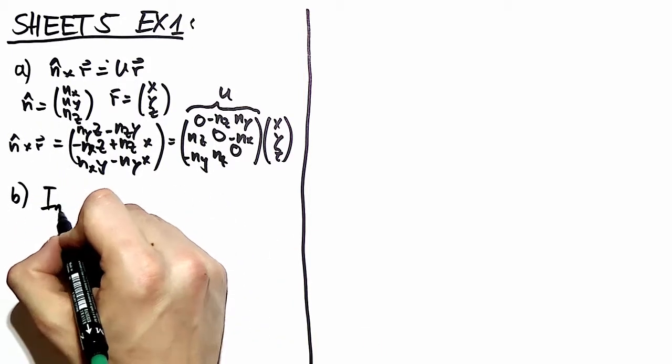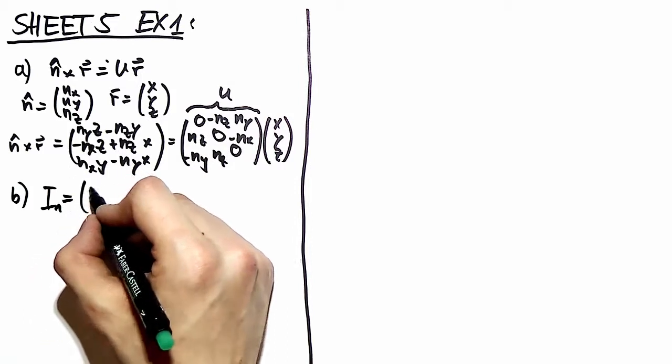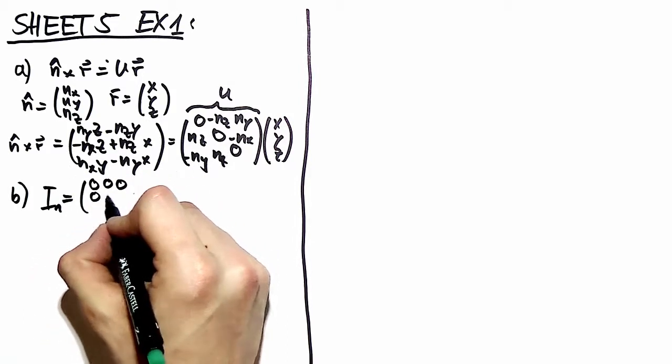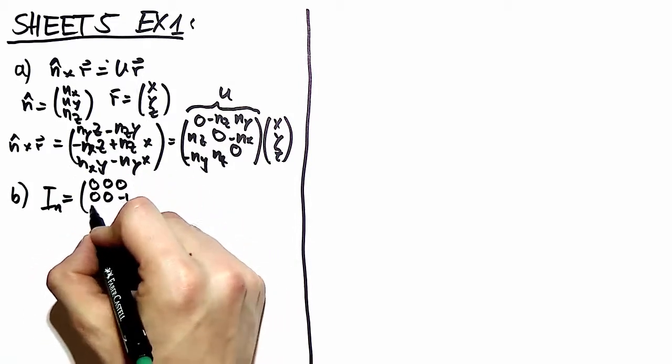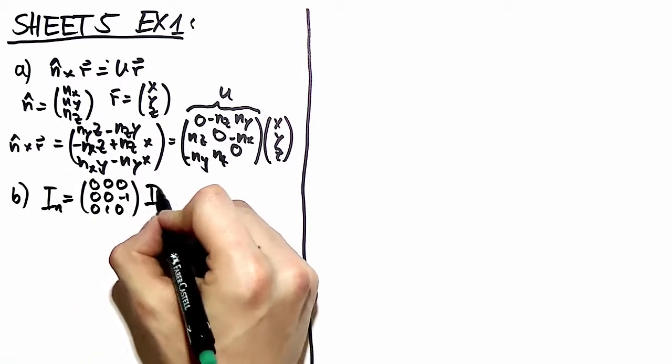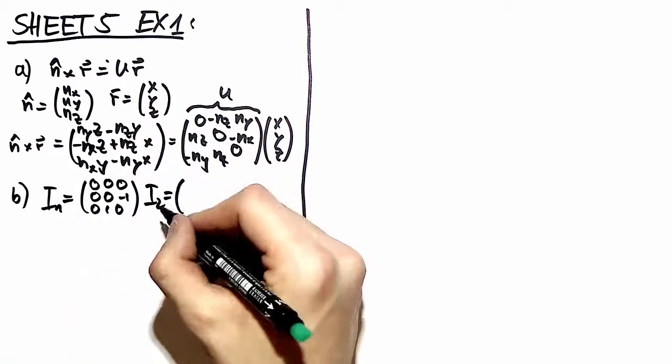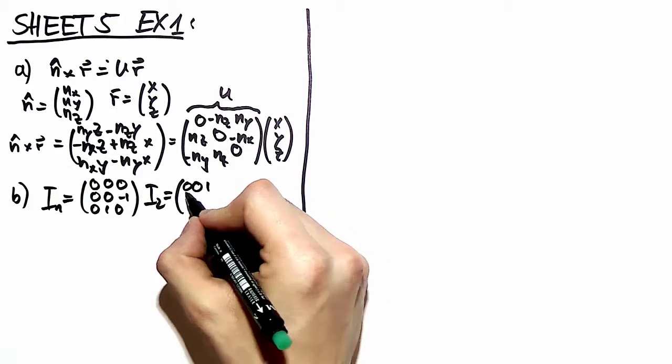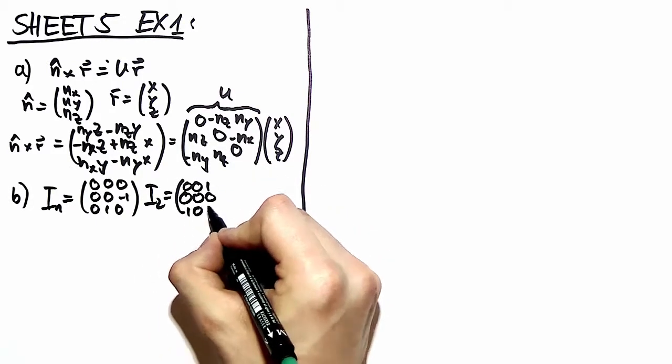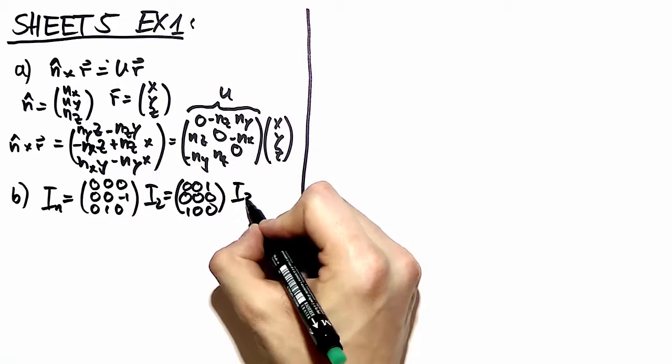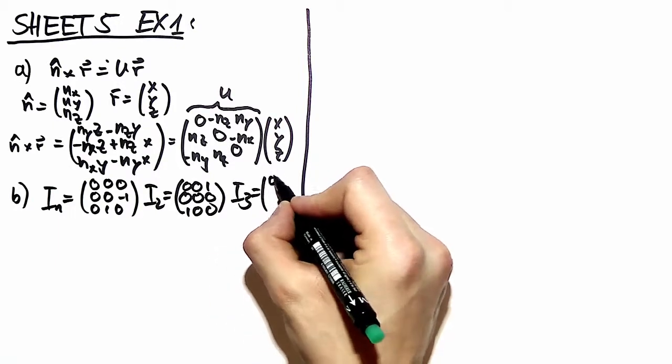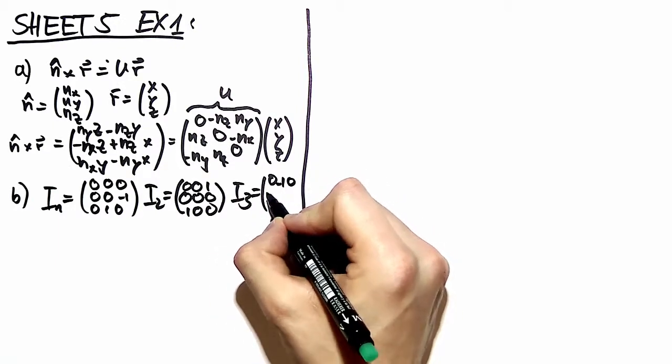In part B, you use your infinitesimal generators i, which you're given in the lecture. I write them down for you again so you can see what's happening. But to this part of this exercise there is nothing behind than just recognizing the infinitesimal generators in your matrix U.